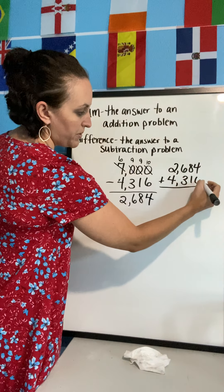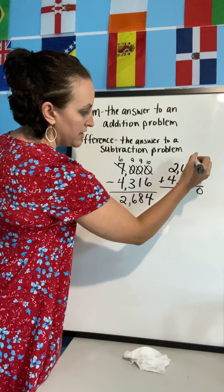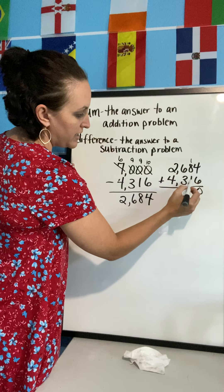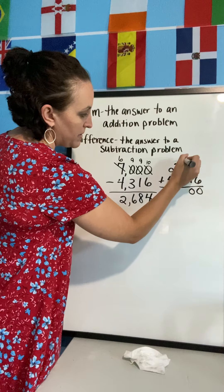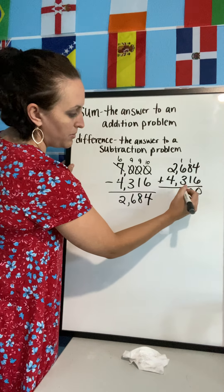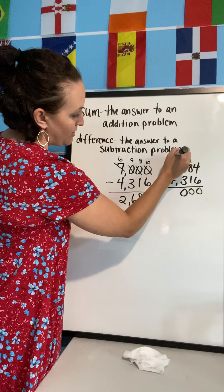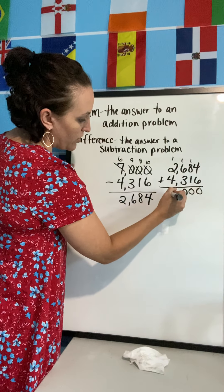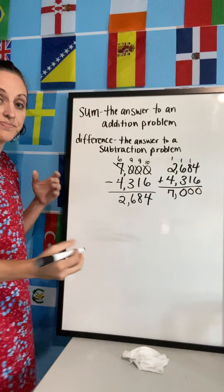All right, four plus six is ten, so I write my zero, regroup my one. One plus eight is nine, plus one more is ten. Write my zero, regroup my one. One plus six is seven, plus three more is ten. Write my zero, regroup my one. One plus two is three, three plus four is seven. There we go.